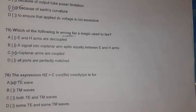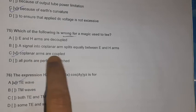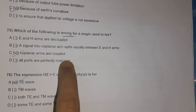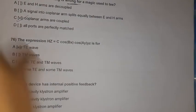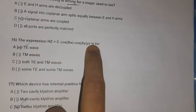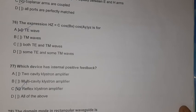Question 73: Which of the following is wrong for a magic T? The wrong statement is: 'coplanar arms are coupled.' Question 74: The given expression is for the TE wave. Question 75: Which device has internal positive feedback? Answer: reflex klystron oscillator.